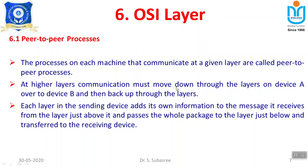Higher layer communication must move down through all the layers on the sending device, travel over to the receiving device, and then move back up through the layers. That is why there is no direct communication between the layers of sender and receiver except at the physical layer. Whenever you request something, it is handed to the application layer, which passes it down to the physical layer: Application → Presentation → Session → Transport → Network → Data Link → Physical.